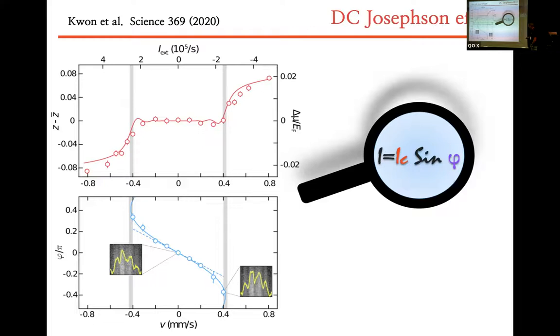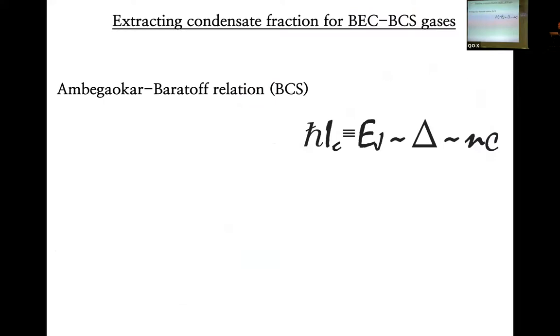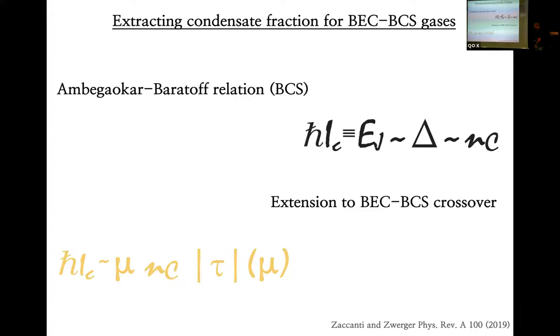Just because we want to claim that we are observing the Josephson effect, we have two reservoirs. We switch off the trap. We see the interference pattern versus the velocity, and we extract the relative phase, and we plot here. This blue line is a fit with a sinusoidal relation. In fact, we demonstrated what we see is very close to the Josephson effect. How can we extract the condensate fraction? For BCS superconductor, there is a relation that connects the critical current with the gap and the condensate fraction. This was extended by Matteo and by Willi Zwerger to all the BEC-BCS crossover. In this way, we connect directly the critical current to the condensate fraction all across the regime of superfluidity.